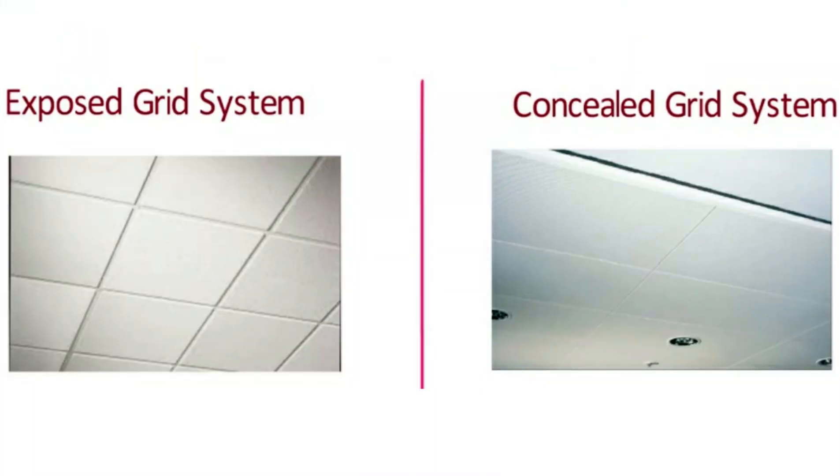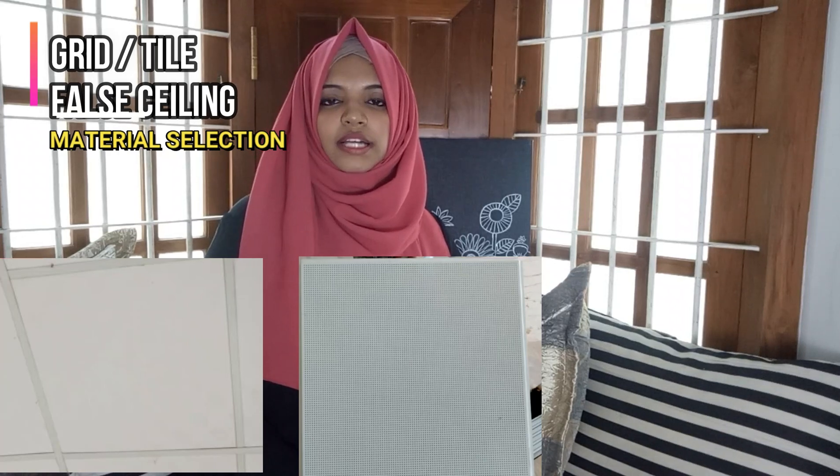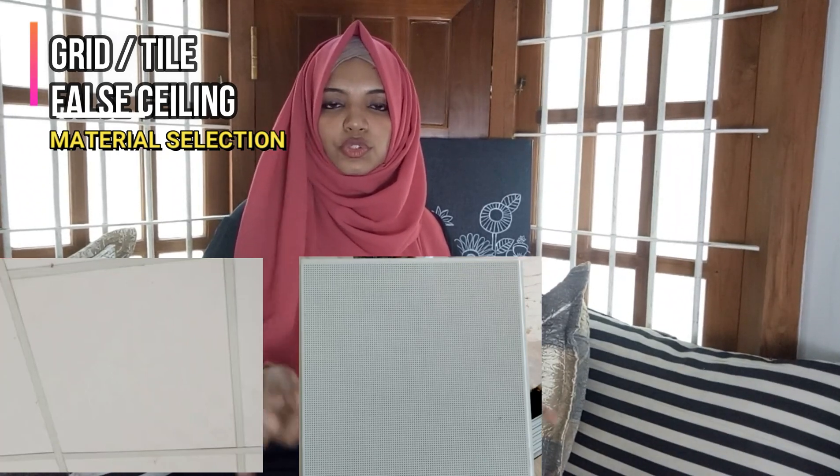For PVC false ceiling installation, we do the frames first, then fix the tiles on top. We can also do a grid ceiling — a tile and false ceiling system. The main advantage of the grid ceiling is that we can remove the tiles from the top for access. The tiles include POP tiles, gypsum tiles, and PVC panel tiles in two-by-two sizes.